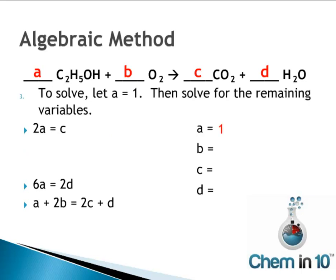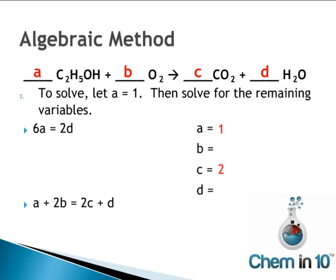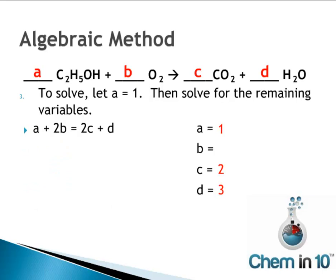Rewriting all equations: 2A equals C, 6A equals 2D, and A plus 2B equals 2C plus D. To solve, we let A equal 1. Plugging into the first equation, 2 times 1 equals C, so C equals 2. Plugging A equals 1 into 6A equals 2D gives 6 equals 2D, so D equals 3.